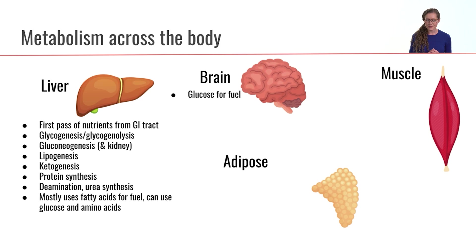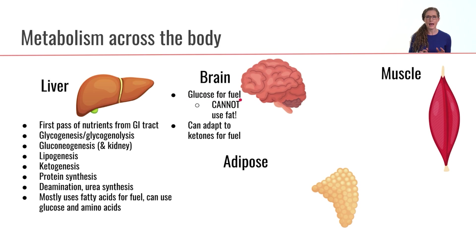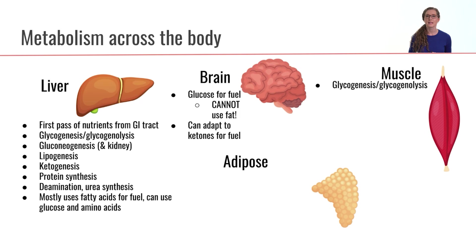Let's move on to the brain. The primary fuel source for the brain is glucose. The brain is a very hungry organ — it needs a constant steady supply of energy and its preferred energy source is glucose. What is especially important to point out is that the brain cannot use fat for energy, so our body has evolved to make sure it can constantly supply glucose to the brain. The brain can also adapt to using ketones for fuel, but first and foremost, its preferred fuel source is glucose.